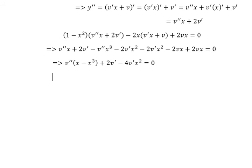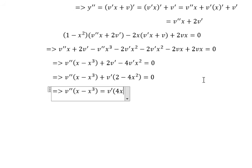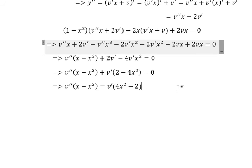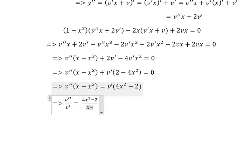After we simplify everything, we need to arrange. Now, we pull second derivative of v over first derivative of v. And we have 4x² - 2 over x - x³.